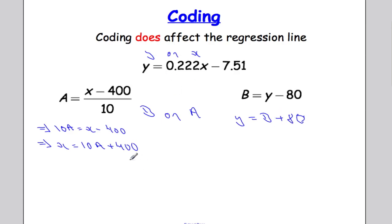So instead of y I'm going to put in b plus 80. So you get b plus 80 equals 0.222 times x which is 10a plus 400 subtract 7.51.